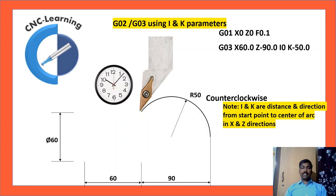In X-axis direction, there is no distance between start point and center of the arc. That is why I is 0. So even if you wish, you can omit I0. In Z-axis direction, it is minus 50, so K minus 50.